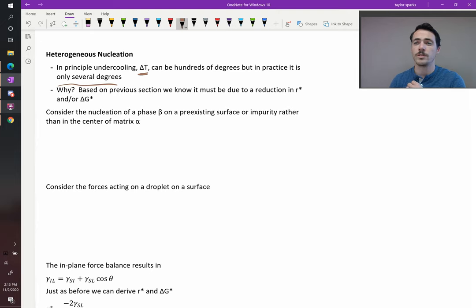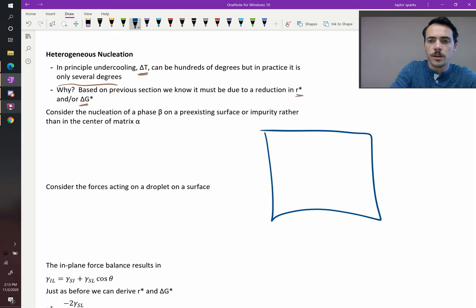The difference is homogeneous versus heterogeneous nucleation. In the previous section, what we calculated was R star and delta G star for homogeneous nucleation. And that assumed that a little nucleus occurred in the bulk of a material. So here's your particle that forms in the bulk of a material. Now that's homogeneous nucleation.